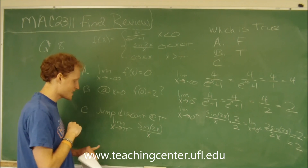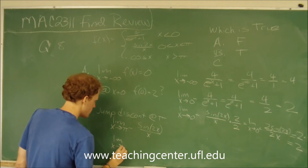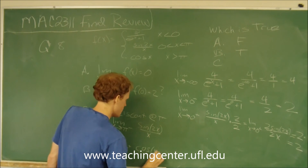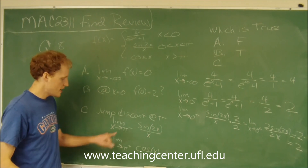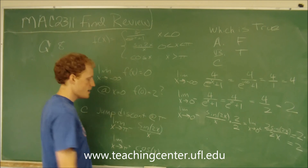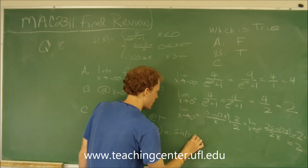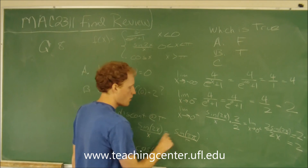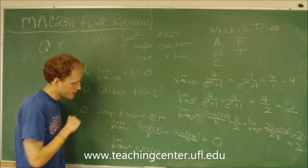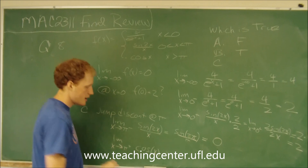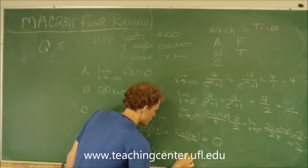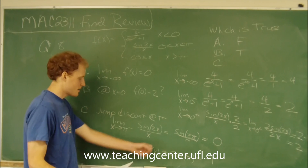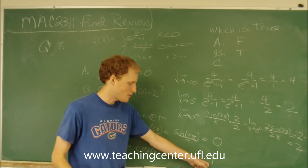The limit as x approaches pi from the right uses the cosine of x. First, plug pi into sine of 2x over x: we get the sine of 2 pi over pi. The sine of 2 pi is zero, so zero over pi equals zero. Then plugging pi into cosine of x gives cosine of pi, which equals negative 1. So the left-side limit equals zero, but the right-side limit equals negative 1.